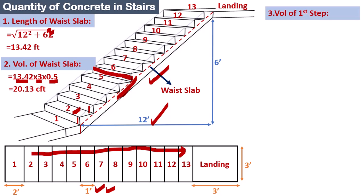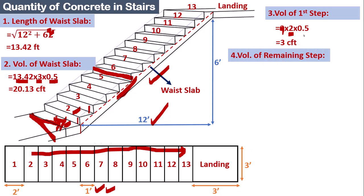Step three: calculate the volume of the first step separately, because its width is two feet while the rest of the steps have a width of one foot. Volume = 3 ft (stair width) × 2 ft (tread) × 0.5 ft (riser height/thickness = 6 inches). The volume of the first step equals 3 cubic feet.